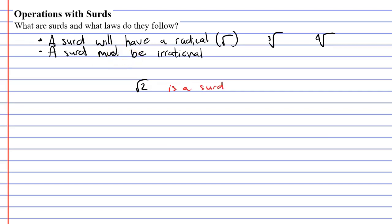So what's an example of something that has a radical but is not a surd? Well, what about the square root of four? The square root of four is equal to two. This is not an irrational number. It is a whole number and therefore doesn't have a decimal that goes on forever. So this one is not a surd.